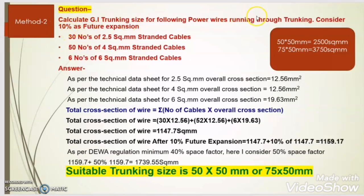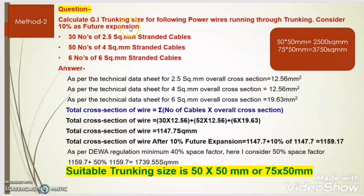Now let us take the same example but calculate the cable trunking size with another method — method number 2. The question is the same: calculate the GI trunking size for power wires running through trunking, considering 10% future expansion — 30 NOS of 2.5 sq mm, 50 NOS of 4 sq mm, and 6 NOS of 6 sq mm standard cable.